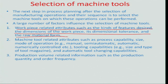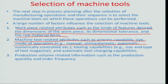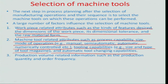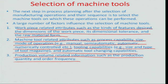We also evaluated machine tool-related attributes such as process capability, size, and mode of operation — for example, whether the machine is manual, semi-automatic, automatic, or numerically controlled. The tooling capabilities, such as size and type of tool magazine, and automatic tool-changing capabilities, were also covered. Finally, we arrived at production volume-related information such as production quantity and order frequency.